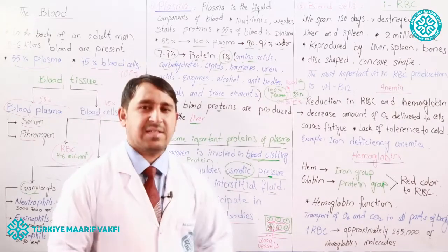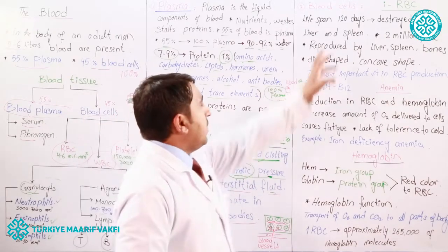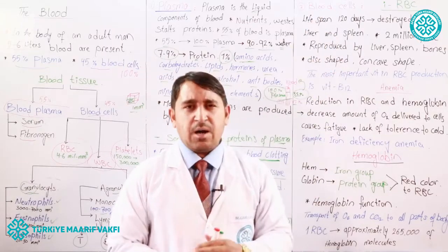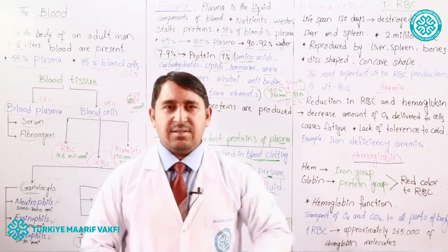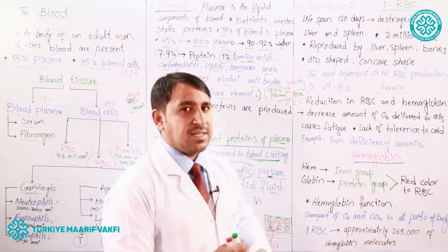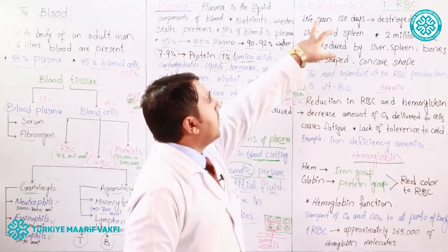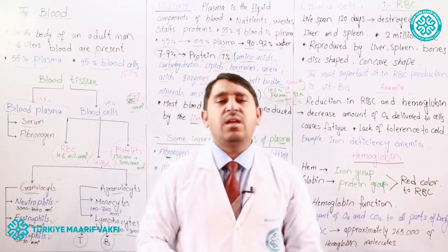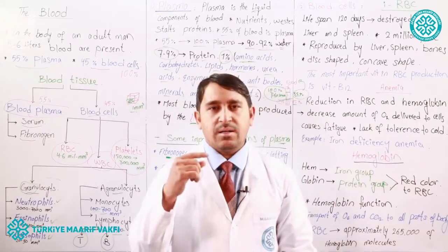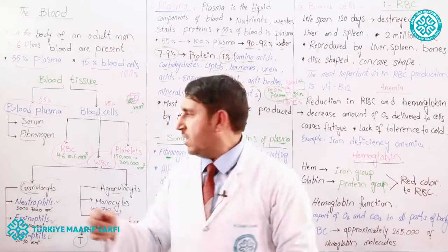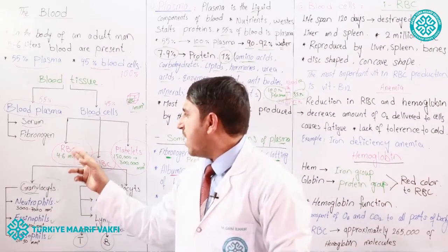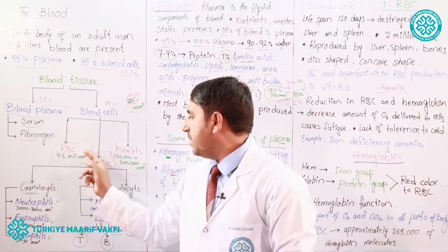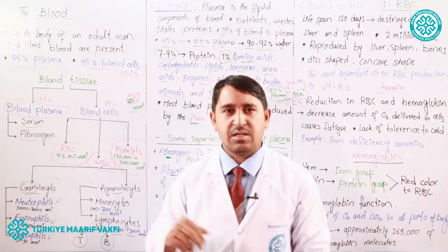Globulin proteins, which form antibodies, are made in our liver and are present in the plasma. Now we are coming to the second part of the blood — the blood cells. Three types of blood cells exist: RBC, WBC, and platelets.